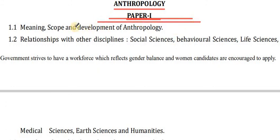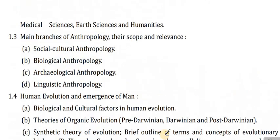The first point of Anthropology Paper 1 is meaning, scope and development of Anthropology. Point 1.2 is relationship with other disciplines: Social Sciences, Behavioral Sciences, Life Sciences, Medical Sciences, Earth Sciences and Humanities. Point 1.3 covers the main branches of Anthropology — their scope and relevance: Social and Cultural Anthropology, Biological Anthropology, Archaeological Anthropology, and Linguistic Anthropology.